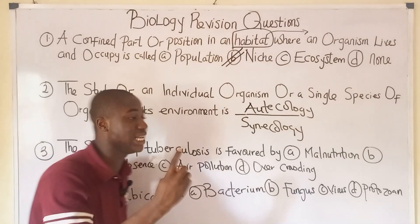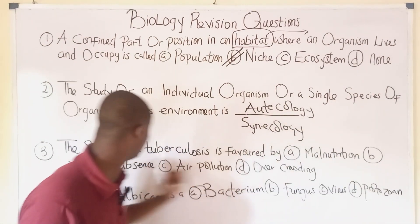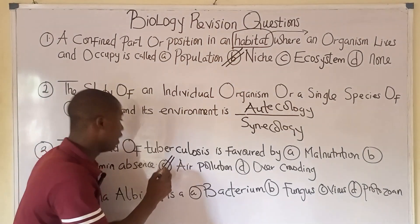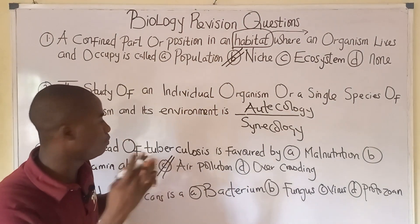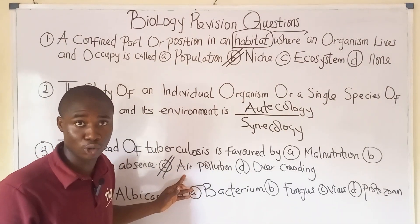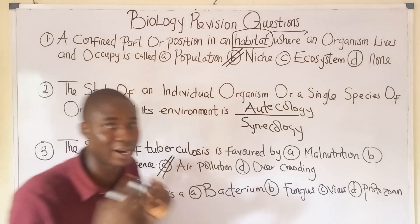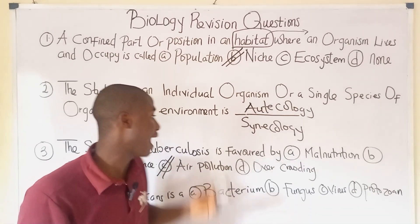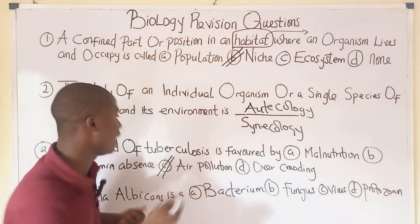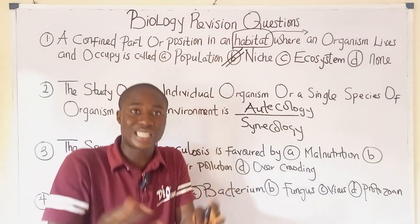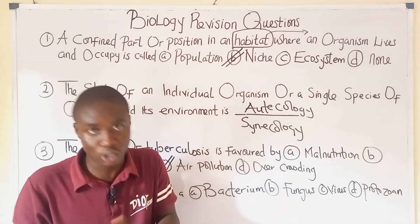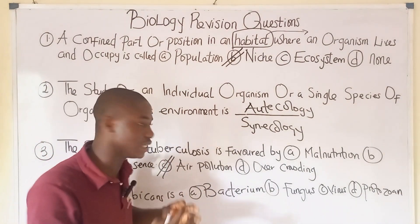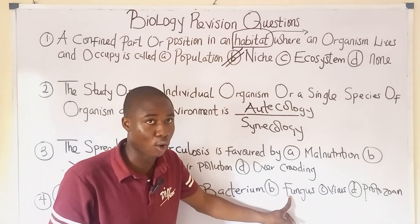Question three: the spread of tuberculosis is favored by — is it malnutrition, vitamin absence, air pollution, or overcrowding? The spread of tuberculosis is favored by air pollution. Tuberculosis is a bacterial disease caused by the pathogen Mycobacterium tuberculosis. It can be treated using the vaccine called BCG, which stands for Bacillus Calmette-Guérin.